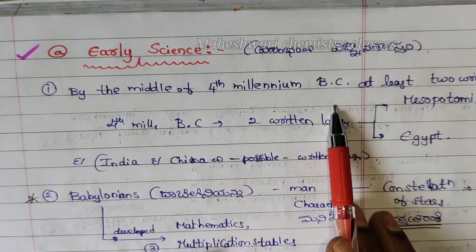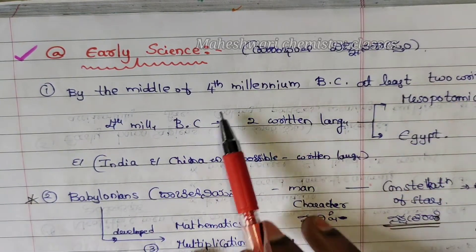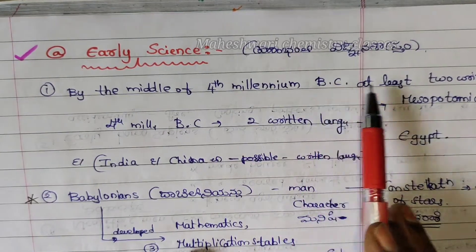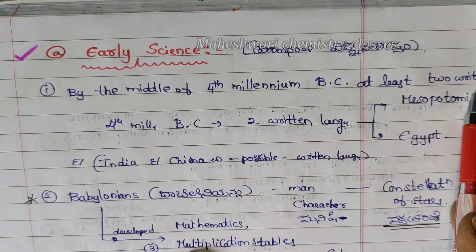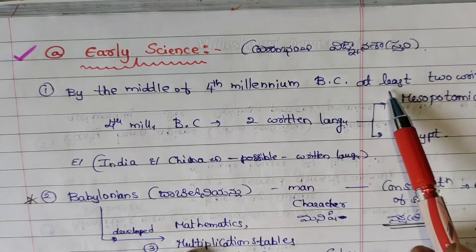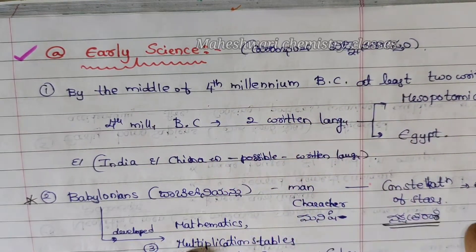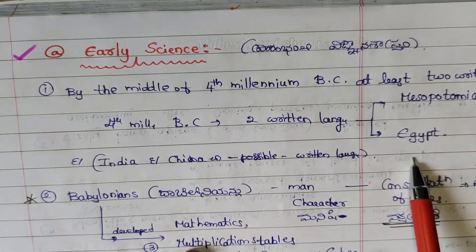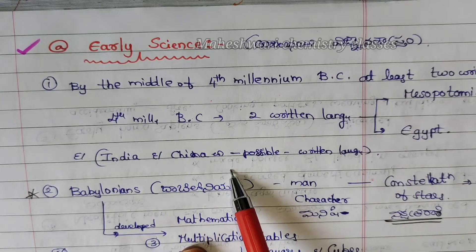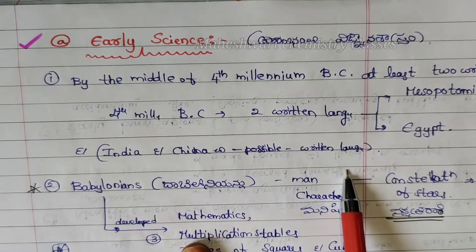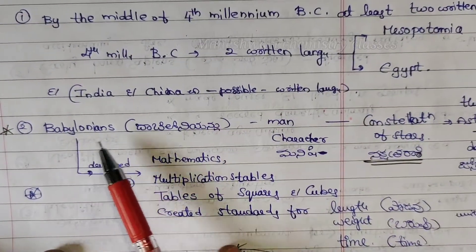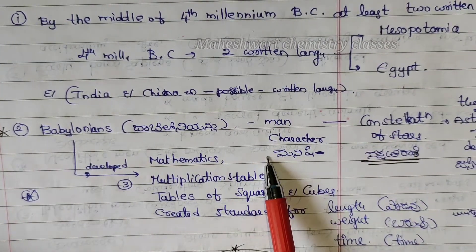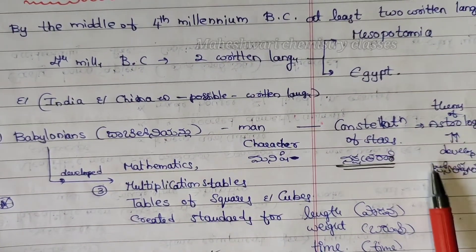In the middle of the 4th millennium BC, there are at least two written languages — in Mesopotamia and Egypt, and also in India and China. The second point is: Babylonians believed that a man's character was decided by the constellation of stars. They believed in the theory of astrology.